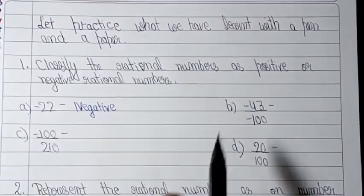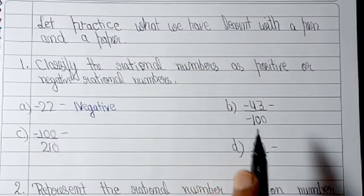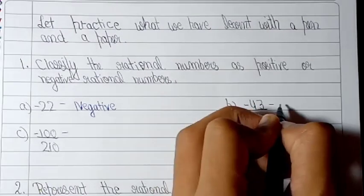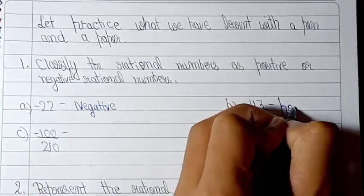For the second part, both numbers are negative. If you remember the rule for positive rational numbers: if both numbers are positive or both are negative, the number is positive. So the answer will be positive.